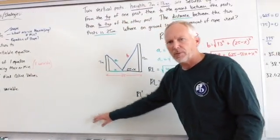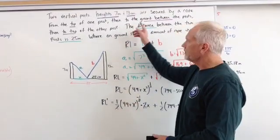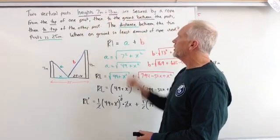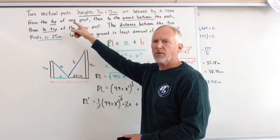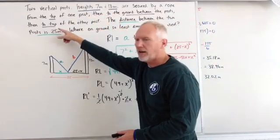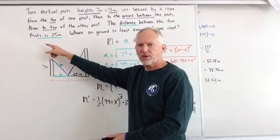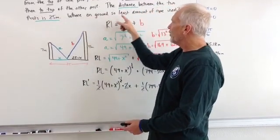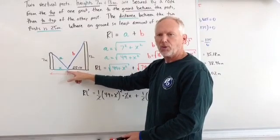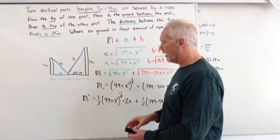So let's look at this problem here we have. Square this up a little bit. All right, two vertical posts, this is a classic problem, of heights 7 and 13 meters are secured by a rope from the top of one post, then to the ground between the two posts, and then again going to the top of the other post. The distance between the two posts is 25 meters. Where on the ground should you place the rope, so right in here, should you place that rope so that you are using the least amount of rope used?